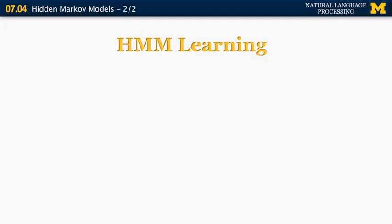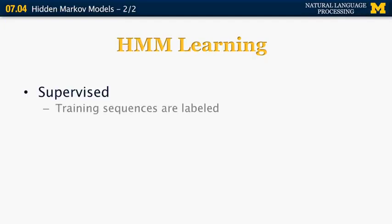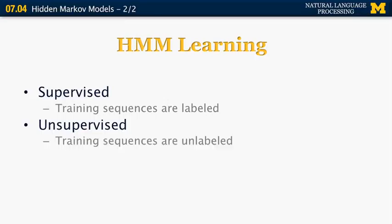There are three different types of learning algorithms for HMMs. The first is called supervised learning, where we have the luxury of having all of our training sequences labeled with parts of speech. The second belongs to the unsupervised learning category, where we only have training sequences like sequences of words or sentences but no labels or parts of speech. In this case, the only thing we need to know is how many states we expect in the HMM, which for part-of-speech tagging corresponds to the number of parts of speech plus possibly start and end.